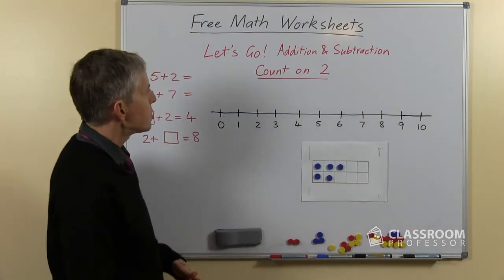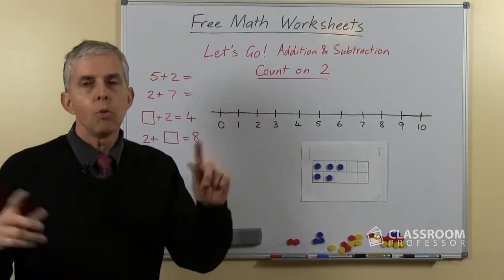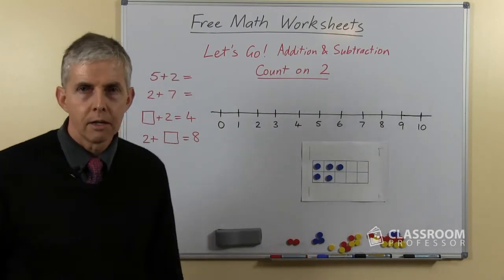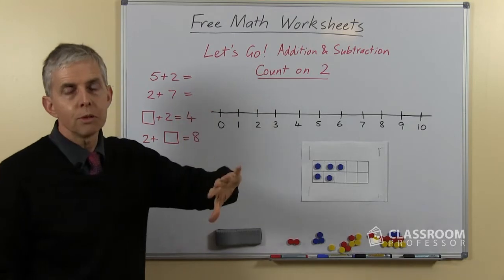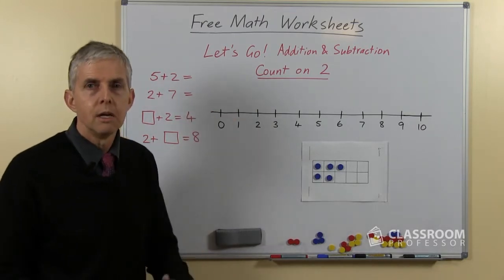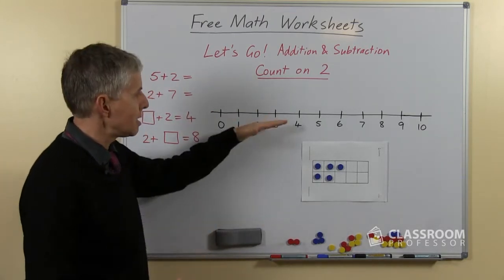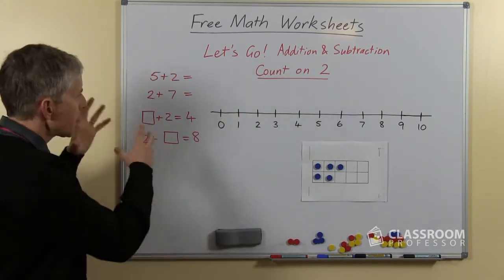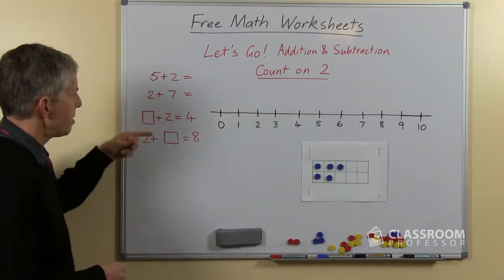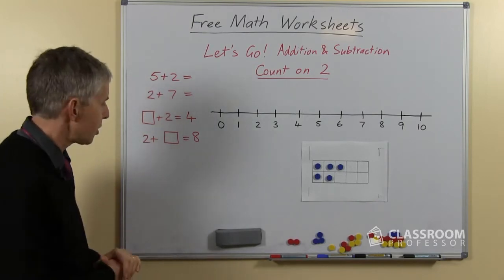This particular strategy is for counting on 2 within 10, so none of the numbers go beyond that. The worksheets include examples of two different resources that we recommend for these facts: the number line and the 10 frame. The questions come in a variety of forms, so I'm going to talk about these four types briefly now.